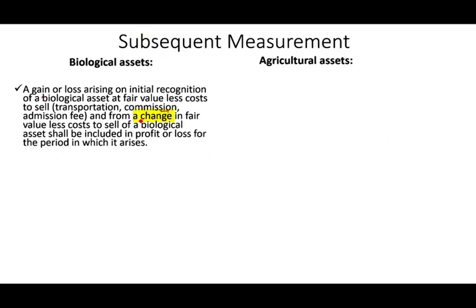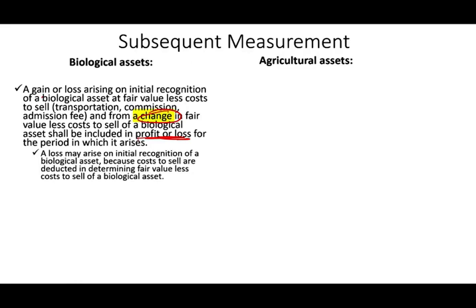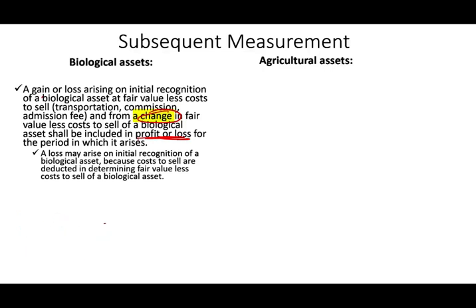For subsequent measurement, you find the change in fair value less cost to sell from the beginning to the end of the period, and any gain or loss goes into profit and loss — the income statement. If there is no fair market value, you use cost minus accumulated depreciation. Depreciation starts when the asset matures — meaning it's ready to produce what it's supposed to. A baby cow is not depreciated until it's mature and producing milk. Similarly, an apple tree may take 7–8 years to start producing; you don't depreciate it until it matures.